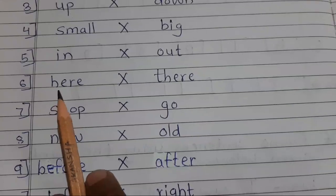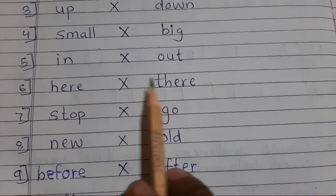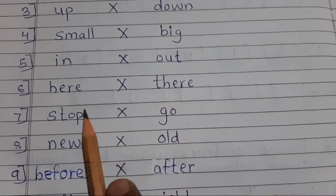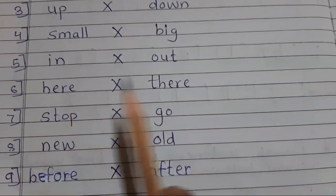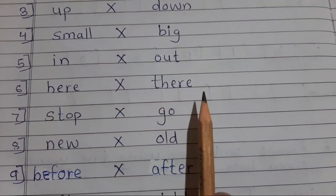Number six. H-E-R-E here. T-H-E-R-E there. Here means yahan. There means wahan. Yahan, wahan. Here, there.